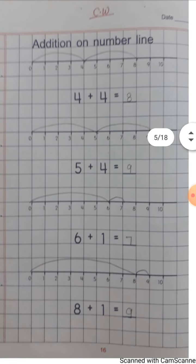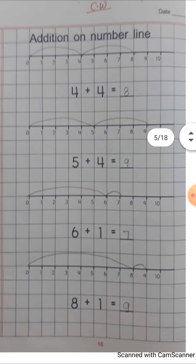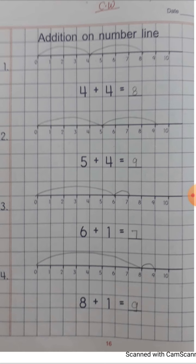Number line पे क्या हो गया है? Addition किया हुआ है। ठीक है? 0 to 4, add 4. 4 में 4 को प्लस करना है। तो देखें हम लोग 0 से 4 तक line खींचेंगे। ठीक है? 0 से 4 तक जब हम लोग line खींचेंगे, तो 0 को count नहीं करेंगे। फिर next हम लोग खींचेंगे — 4 to 4 और प्लस करना है।